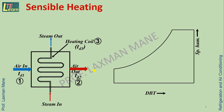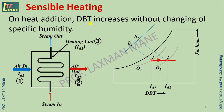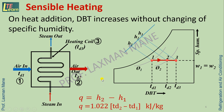In sensible heating, heat is added to the air such that the dry bulb temperature of the air is increased without changing its specific humidity. Air enters at dry bulb temperature Td1, comes in contact with a heating coil at temperature Td3, and exits at dry bulb temperature Td2. Heat added to the air is given by Q = H2 − H1 (kJ/kg), and can also be expressed in terms of temperature.